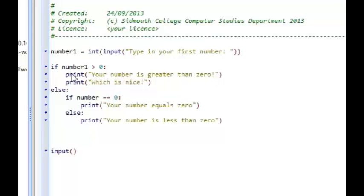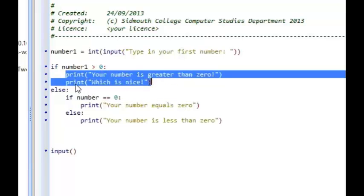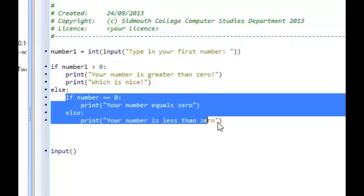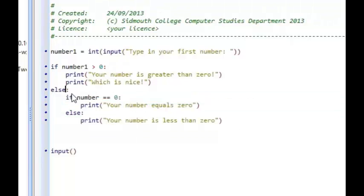So I could actually display two print statements if number1 is greater than zero. The program knows to print both of these because they're indented. They're inside this if. And then inside this else, again I've indented. So this if-else is actually indented inside the if. So indentation is really, really important so the program knows what to do.